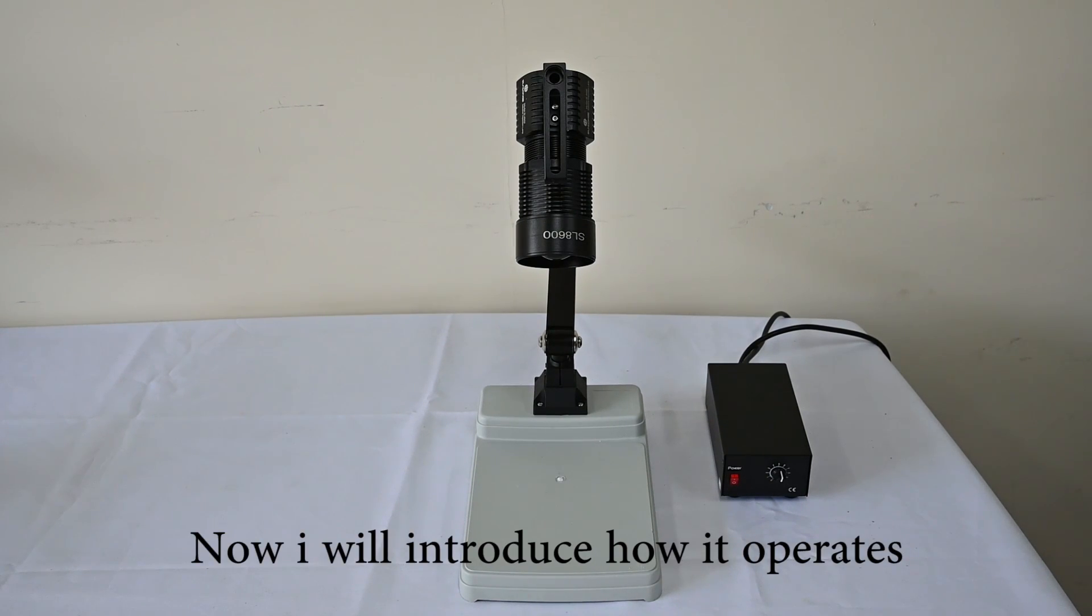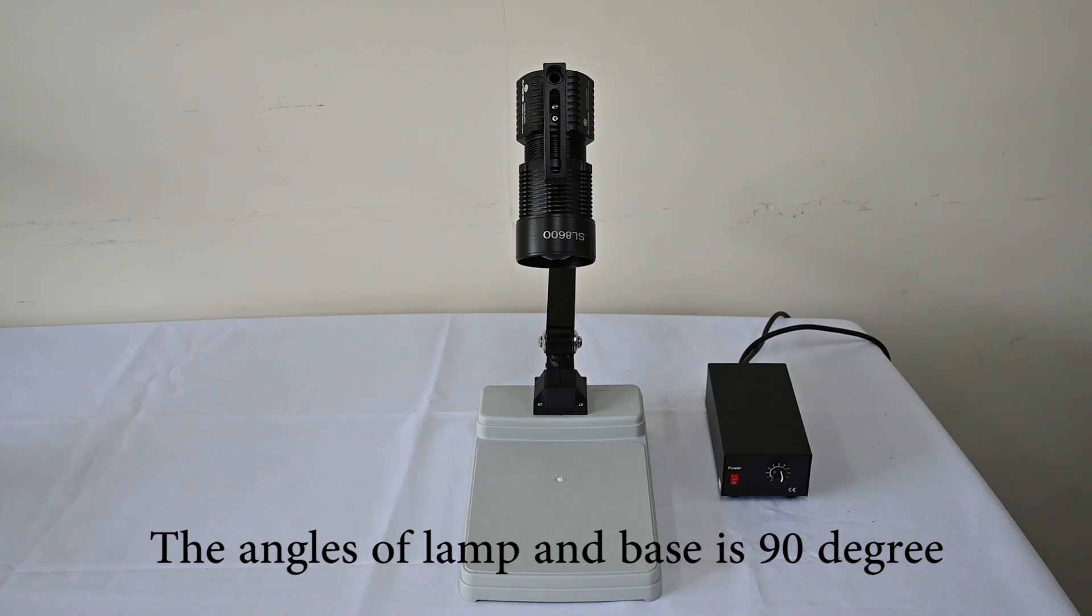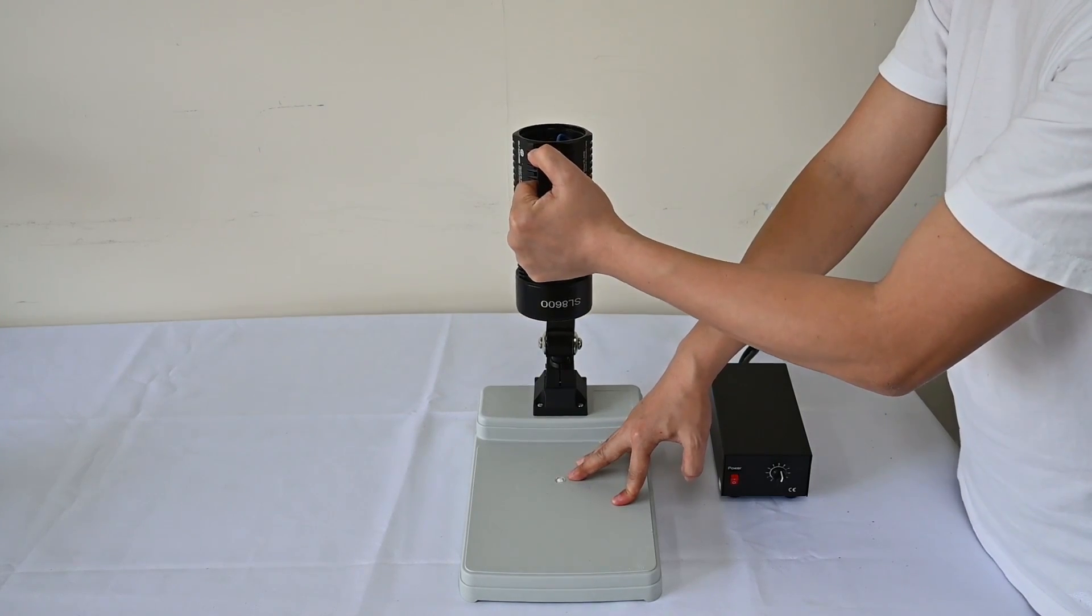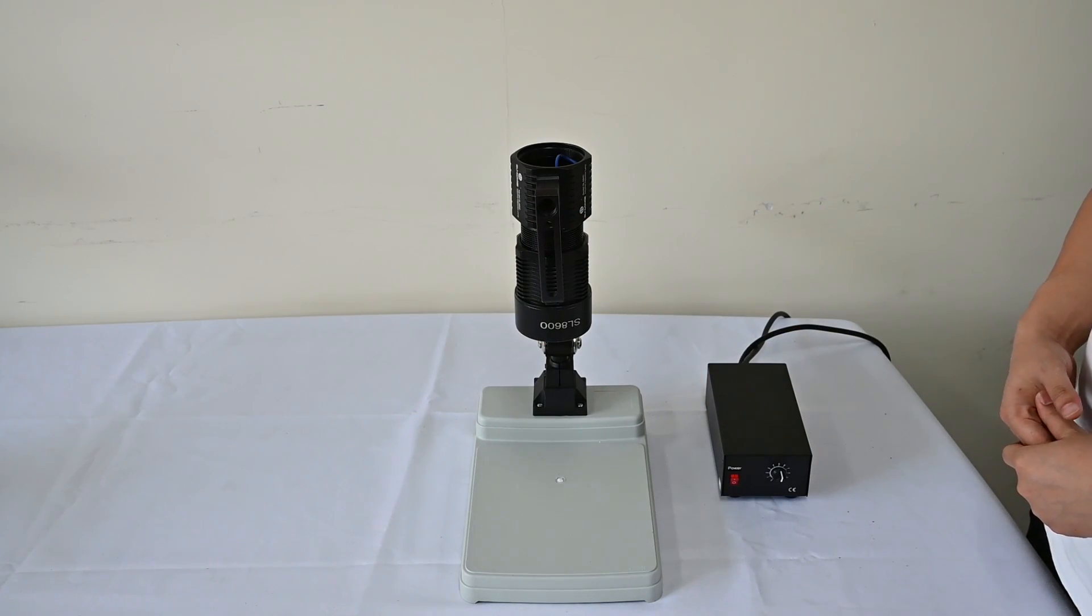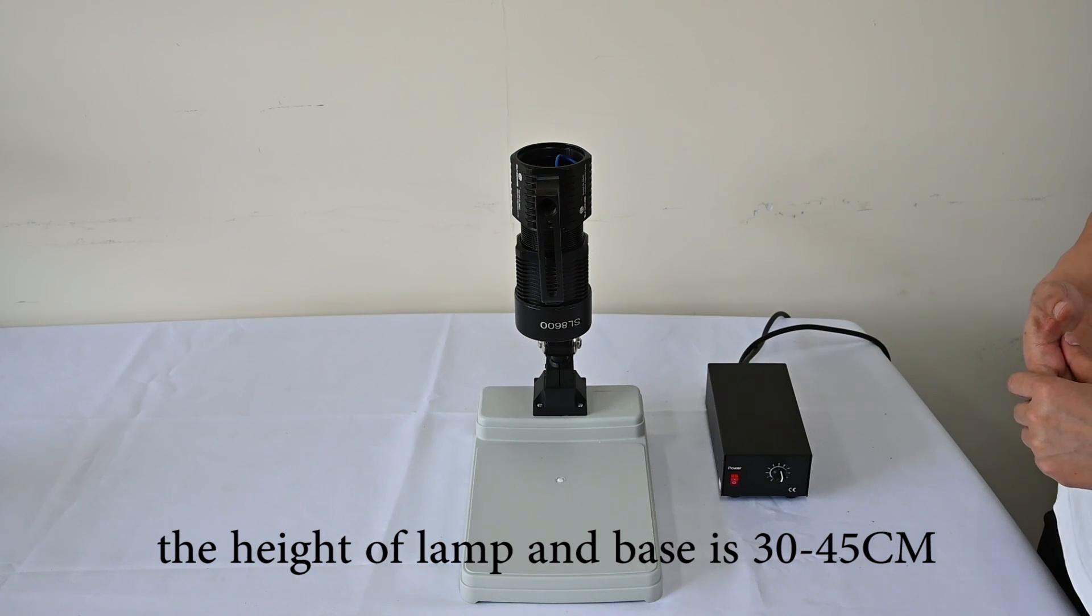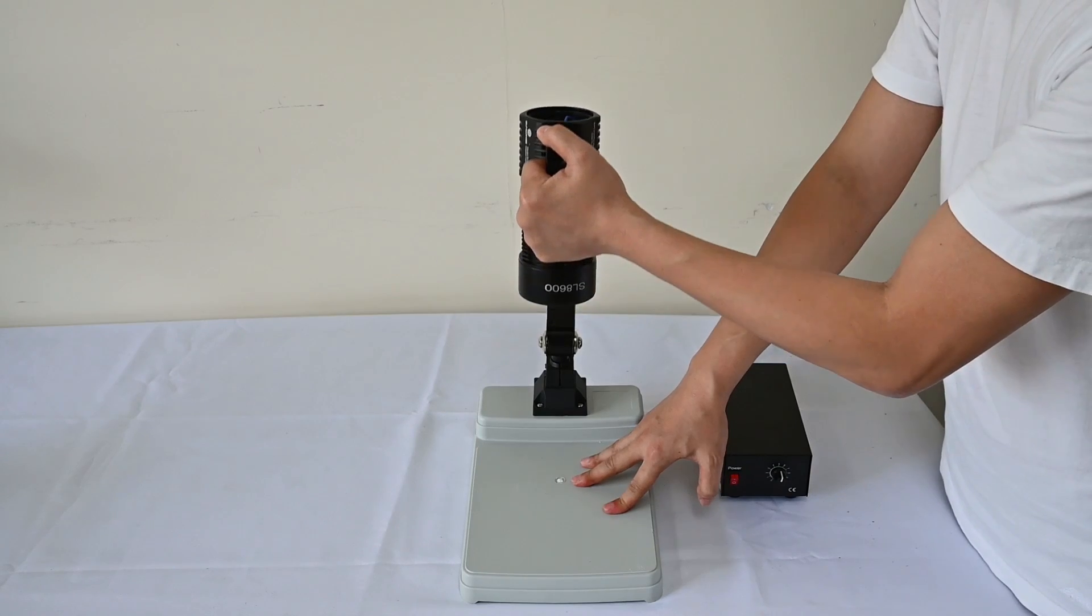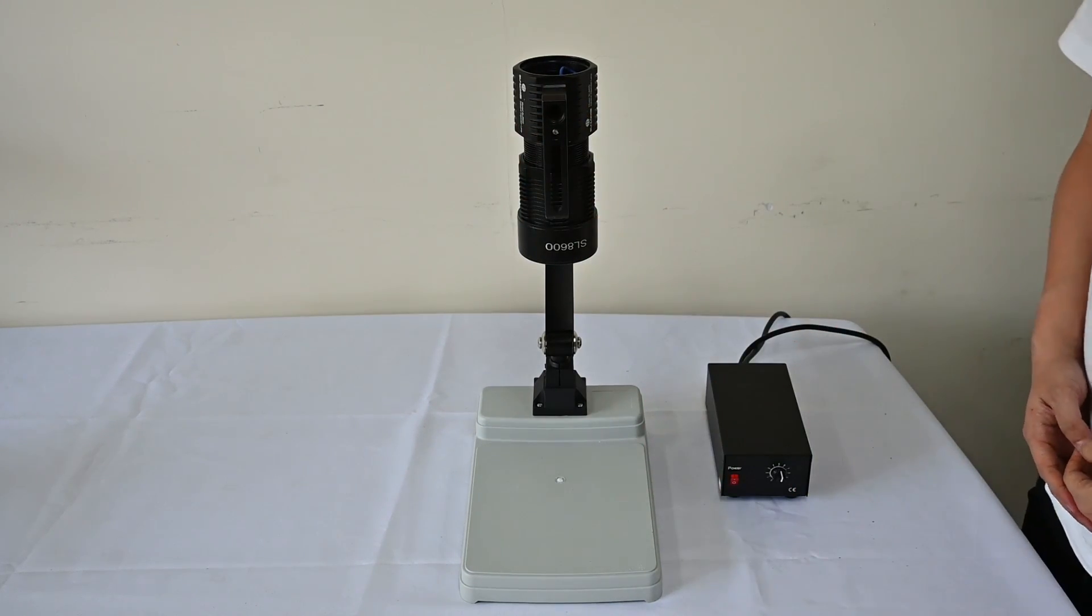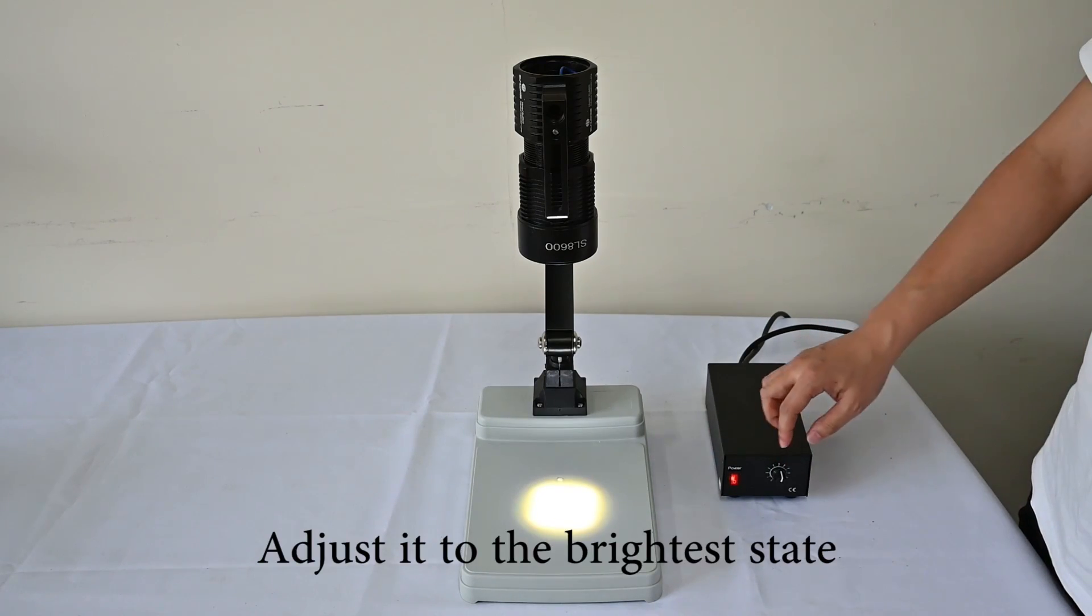Now, we will introduce how it operates. First, adjust the angles. The angles of the lamp and the base is 90 degrees. Second, adjust the height. The height of the lamp and the base is 30 to 45 centimeters. That's because the focal length is 30 to 45 centimeters. And third, turn on the power. Adjust it to the brightest state.